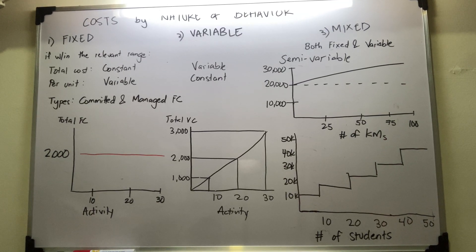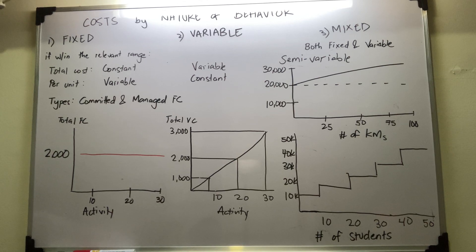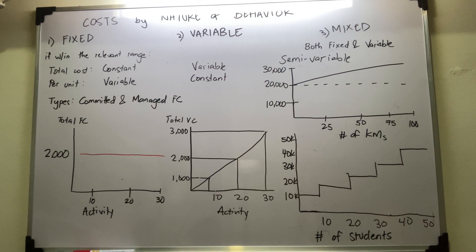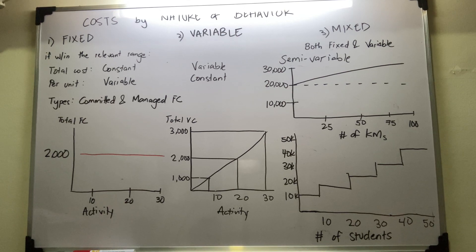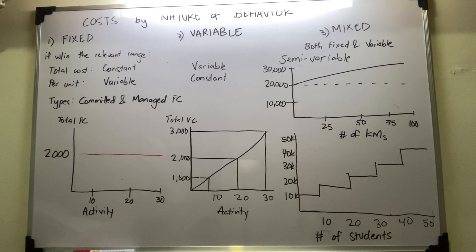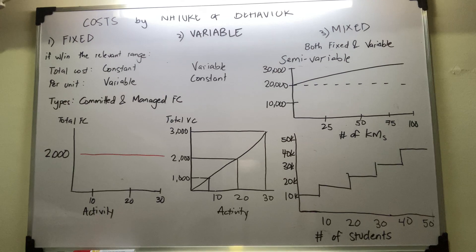Hi class. So for this session, we're going to discuss the costs by nature of behavior. We all know that there are three kinds of costs. First is the fixed cost, second is the variable, and third is the mixed cost.